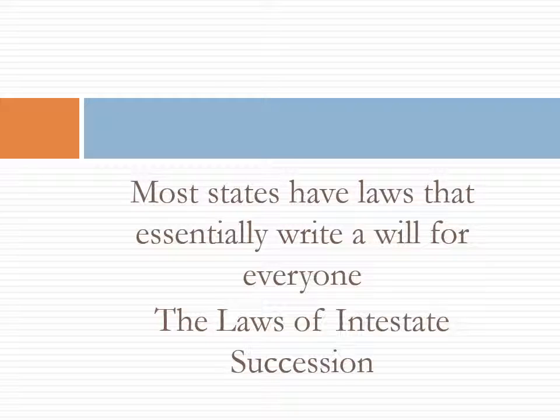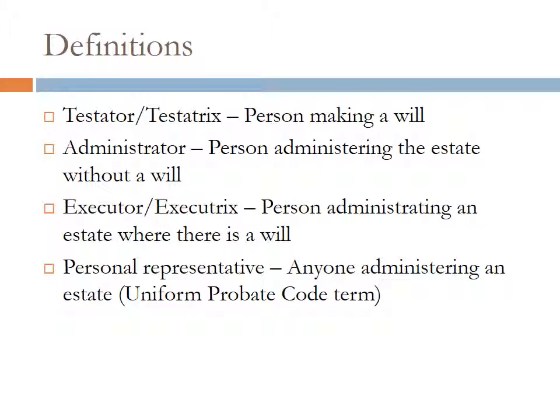Here are a few definitions that might help. A testator or testatrix is a person making the will. An administrator is a person who administers the estate without a will. An executor or executrix is the person administering an estate where there is a will. In Uniform Probate Code states, both of those people are called a personal representative, so anyone administering an estate — with or without a will — is a personal representative.